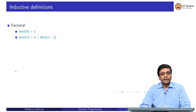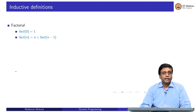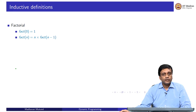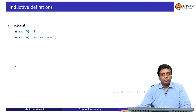Typically, recursive functions arise from inductive definitions. For instance, we can define factorial inductively by defining the base case: the factorial of 0 is 1. And for arbitrary n bigger than 1, the factorial of n can be got by multiplying the recursive call factorial n minus 1, and multiplying it by n.